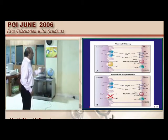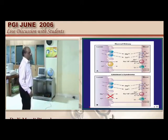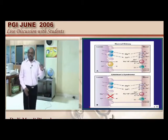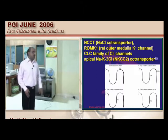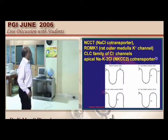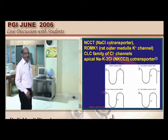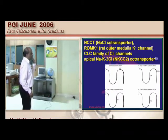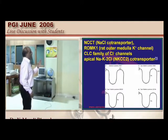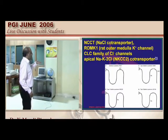In Gitelman syndrome, the problem is at the distal convoluted tubule with the sodium-chloride co-transporter (sodium and chloride travel like twin sisters). In Bartter type 1, the problem is the sodium-potassium-2-chloride co-transporter at the thick ascending limb of loop of Henle. In Bartter type 2, the problem is the CLC family of chloride channels at the thick ascending limb.